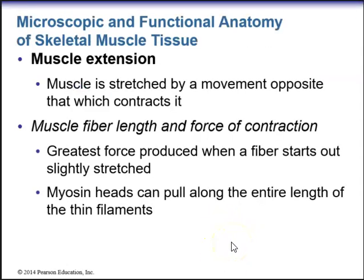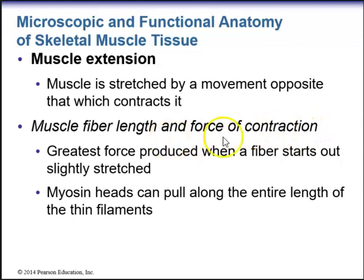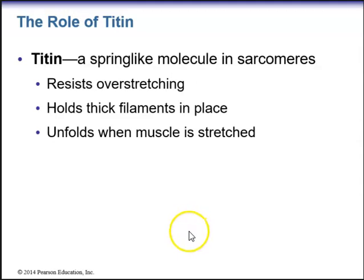With muscle extension, the muscle is stretched by a movement opposite to the one that contracts it. The greatest force is produced when a fiber starts out slightly stretched — myosin heads can pull along the entire length of the thin filaments. Titin, the spring-like molecule in sarcomeres, resists overstretching and holds thick filaments in place. The A-band made of thick myosin filaments does not lengthen or shorten, and titin unfolds when the muscle is stretched.